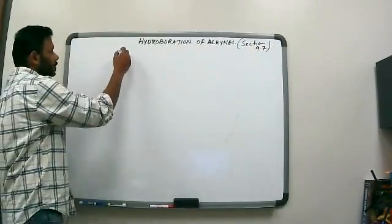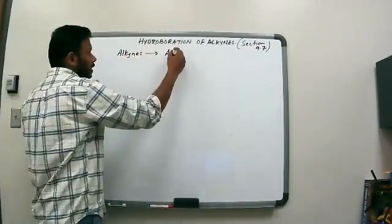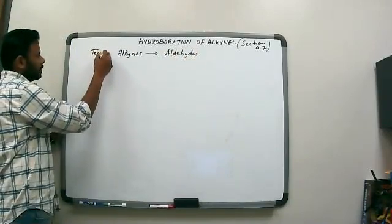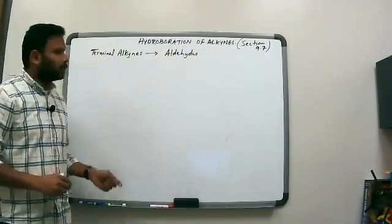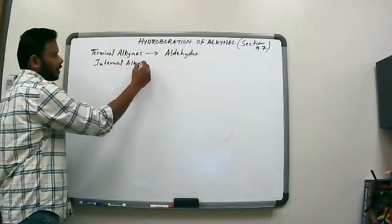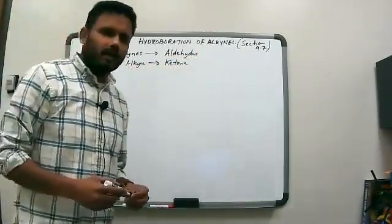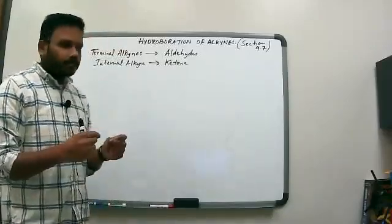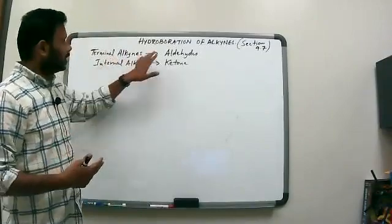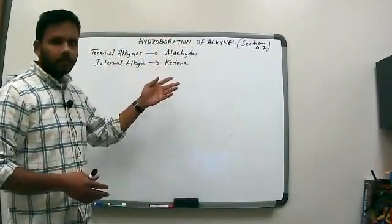Section 9.7 in the textbook. This reaction converts terminal alkynes into aldehydes. If it's an internal alkyne, you would get ketone products. So to contrast: terminal alkynes under acidic hydration conditions give you ketones, but terminal alkynes under hydroboration — which is under basic conditions — give you an aldehyde product.